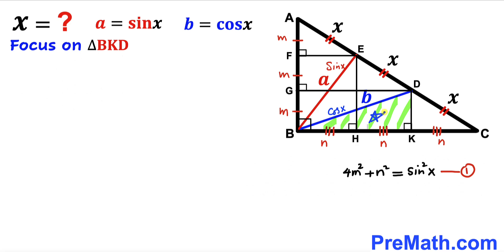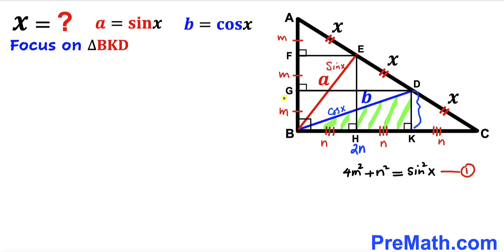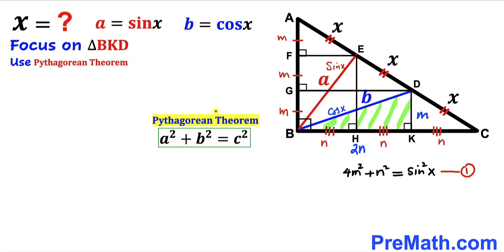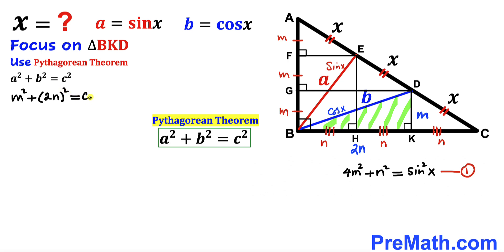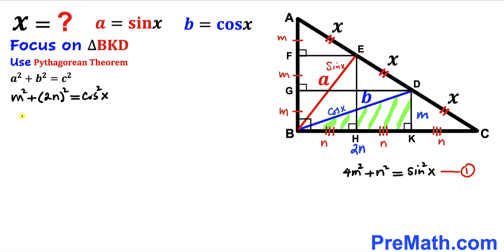Now let's focus on right triangle BKD. Side BK is n plus n, which equals 2n, and side KD equals m. The hypotenuse BD is cosine of x. Applying the Pythagorean theorem: m² + (2n)² = cos²x. Simplifying gives us m² + 4n² = cos²x. This is Equation 2.